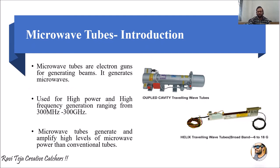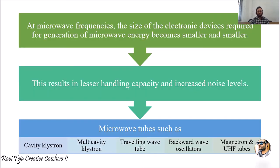If you see here, these are some of the microwave tubes used in real-time applications, which keep on generating high power with high microwave signals. To avoid lesser handling capacity and increased noise levels, microwave tubes were introduced over conventional tubes. The types shown include cavity klystron, multi-cavity klystron, traveling wave tube (TWT), backward wave oscillators, magnetron, and UHF tubes.